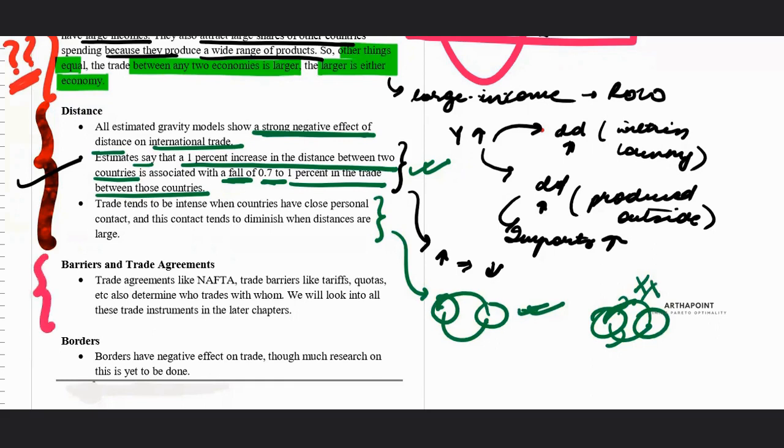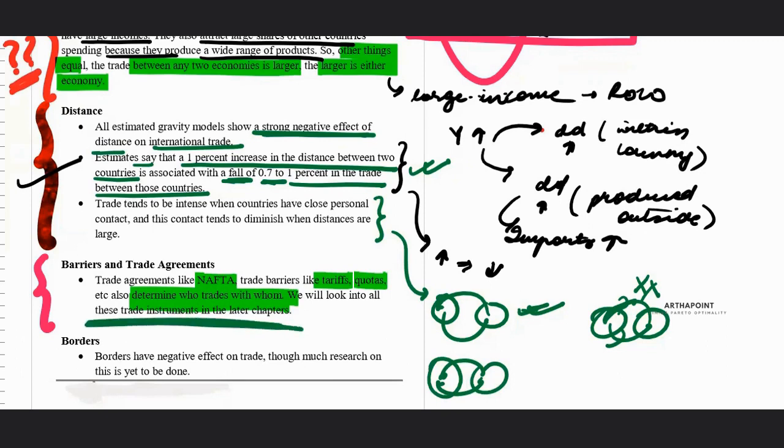So if there are trade agreements like NAFTA, trade barriers like tariff, quota, this also determines who trades with whom. So people or countries which are in a particular trade agreement will only trade with each other, but not with the other countries. So we will go ahead and we will look into these various trade instruments in the later chapters.